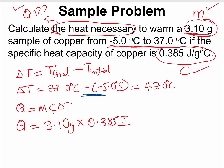Joules per gram per degree Celsius, multiplied by the change in temperature which we just calculated to be 42.0 degrees Celsius.